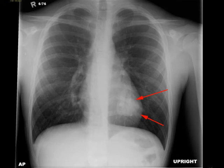This is a patient who presents with recurrent nosebleeds and shortness of breath. A frontal radiograph of the chest was obtained, which demonstrates a mass in the left lower lobe as indicated by the red arrows.